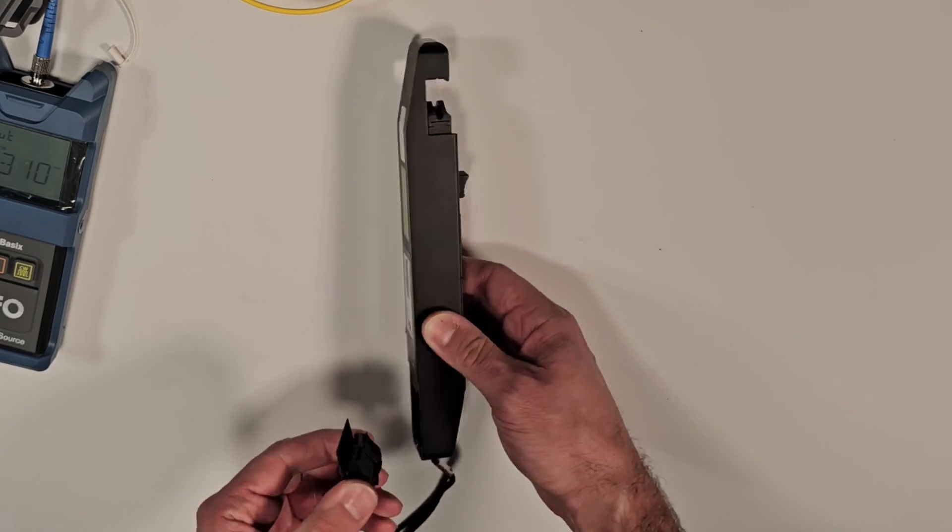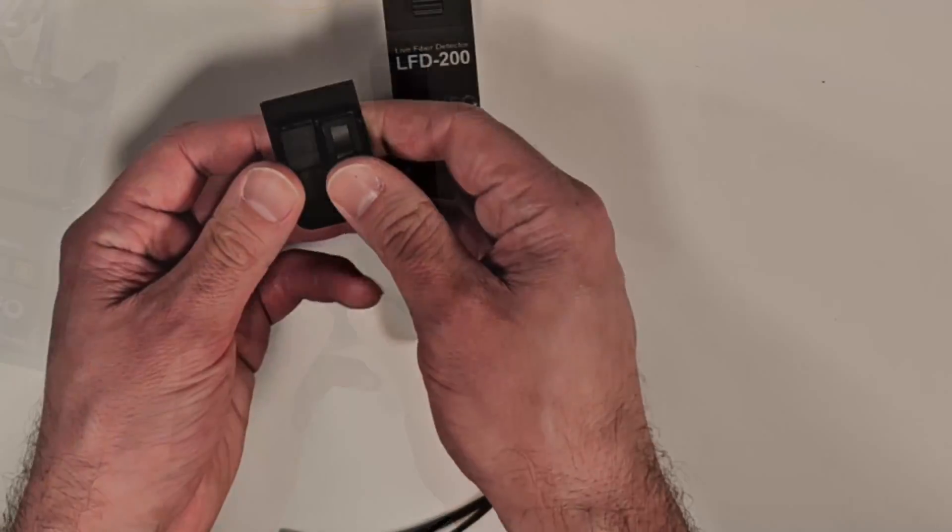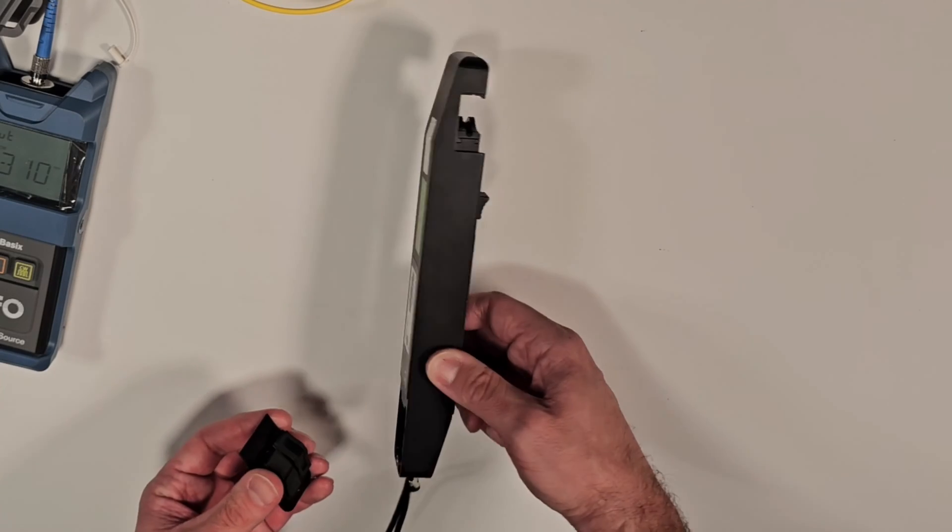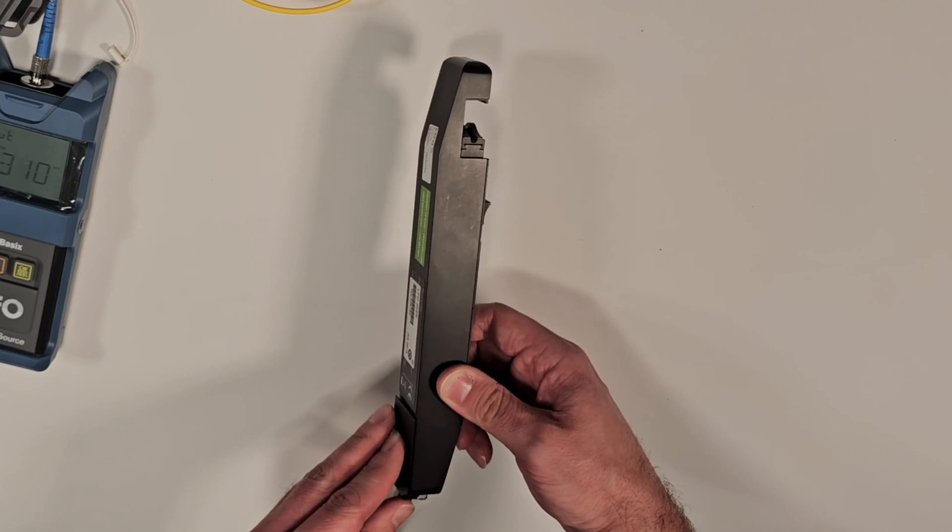Adapter heads support 900 micrometer buffered fiber, two or three millimeter jacketed fibers, ribbon fibers, or 250 micrometer coated fiber. The adapter heads are stored in an internal storage compartment located at the back of the unit.